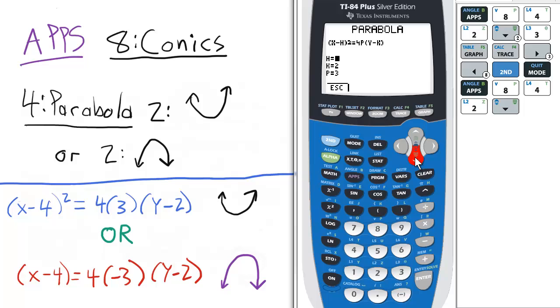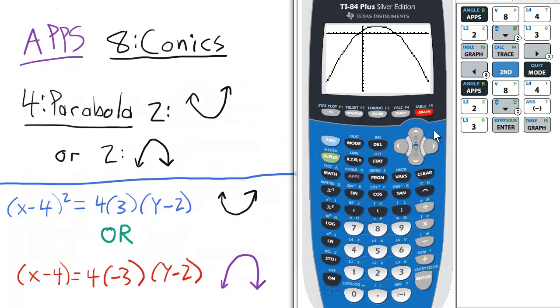And then I'm only going to change the P value to negative 3, press enter, graph it. Notice it opens down, same vertex, just happens to open down.